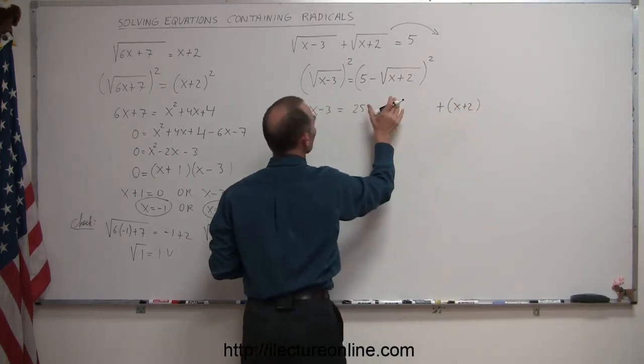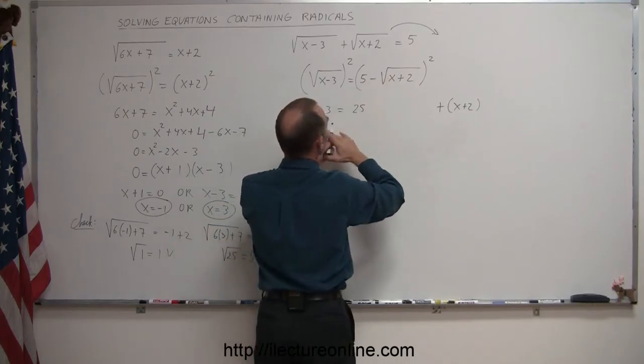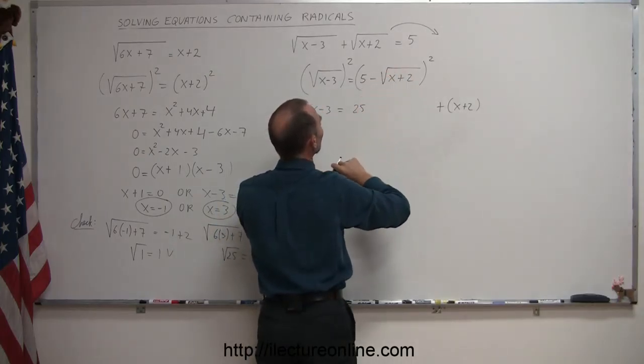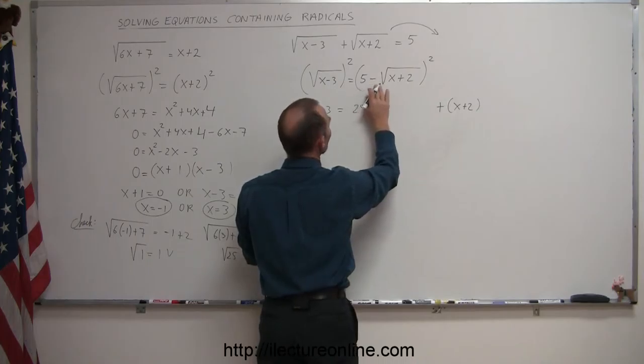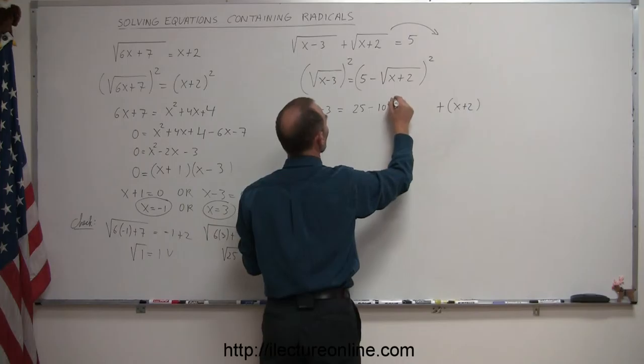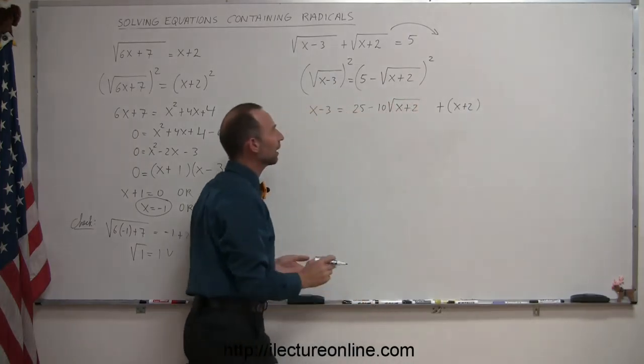And then we have to multiply the 2 in the middle. I'm sorry. You have to multiply these 2 and then double them. So 5 times this is minus 5 times the square root of x plus 2, times 2 is minus 10 times the square root of x plus 2.